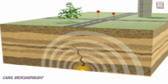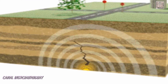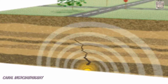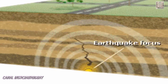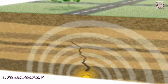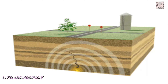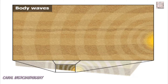Earthquakes occur when rocks deep underground suddenly break under pressure or slip along a fault. The point of release is known as the focus of the earthquake. The energy released by the earthquake radiates from the focus as body waves. There are two types of body waves.